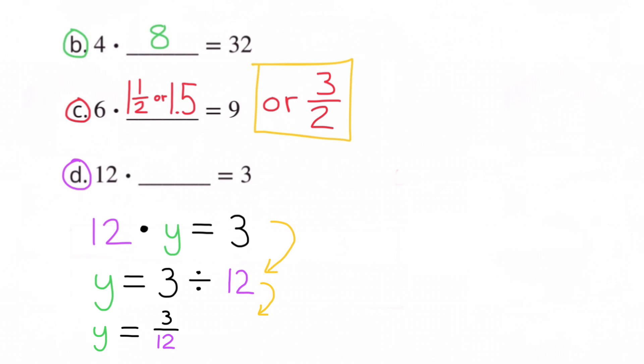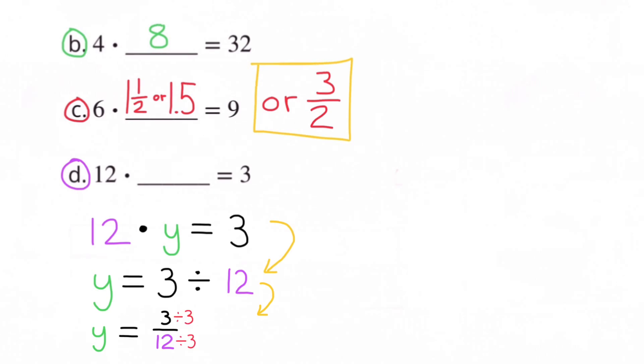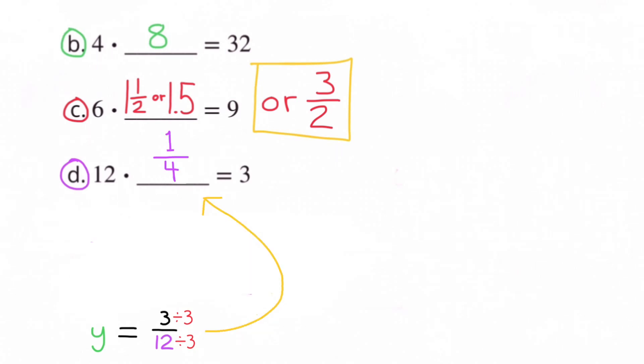3/12 can be simplified. 3 divided by 3 is 1, and 12 divided by 3 is 4, so y would equal 1/4. 12 times 1/4 equals 3, and that's really the same as 1/4 of 12 is 3.